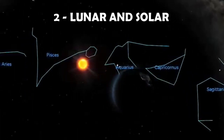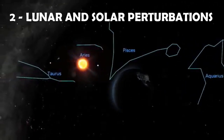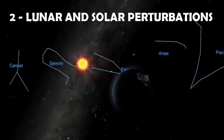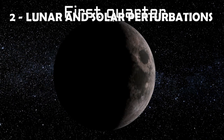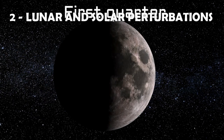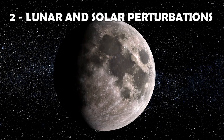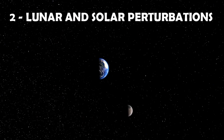Lunar and solar perturbations: Since the Earth has a large natural satellite, the moon, and the lunar orbit is not very far from the Earth, the semi-major axis of the lunar orbit is about 380,000 km and the eccentricity is about 0.05. The gravity of the moon notably influences satellites.